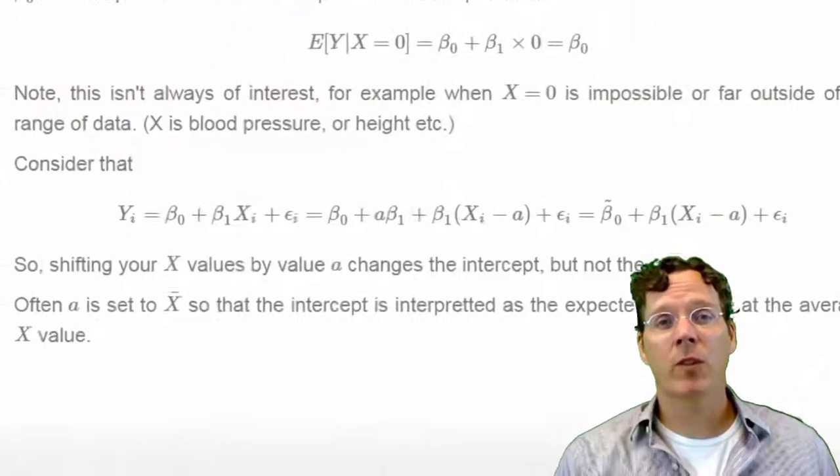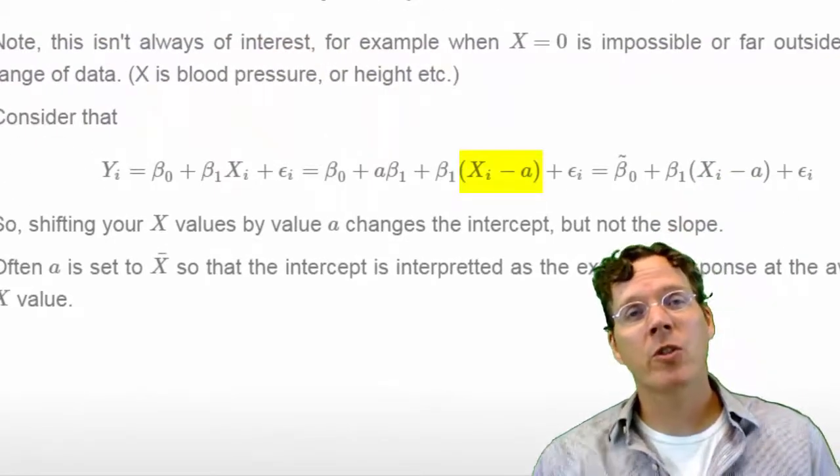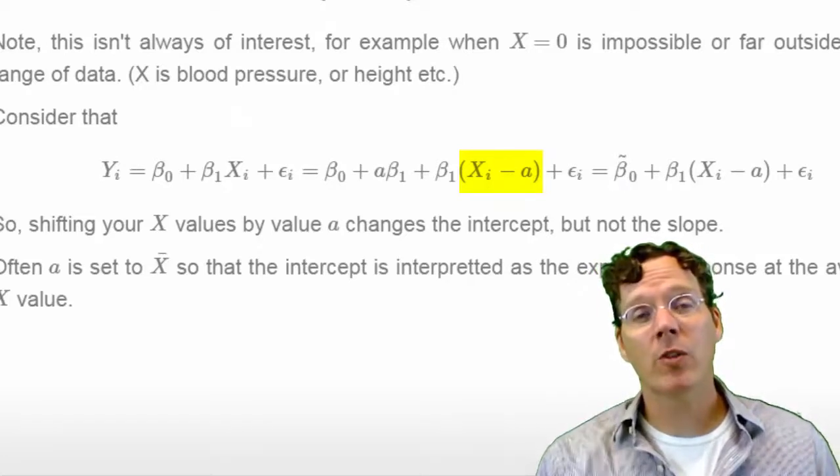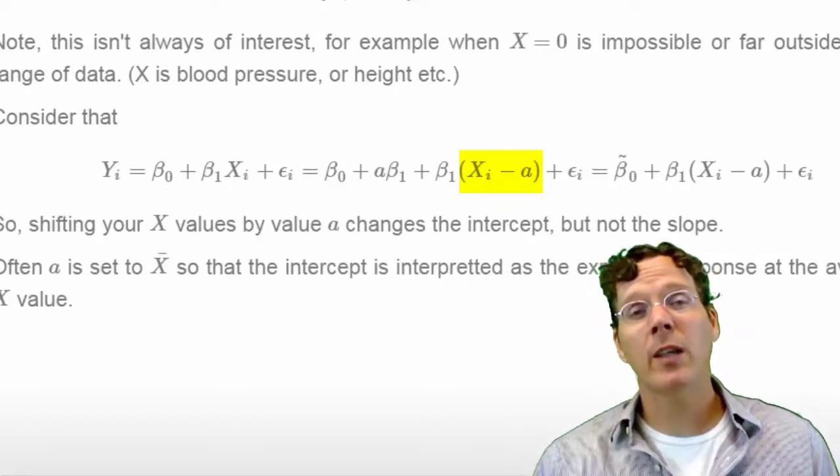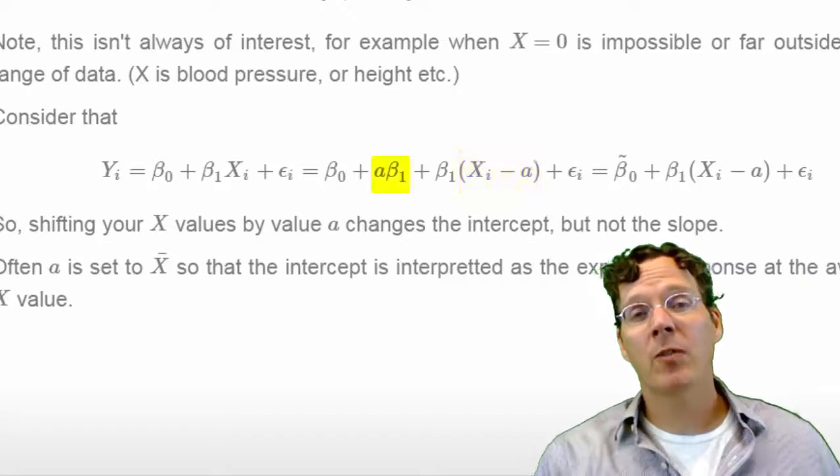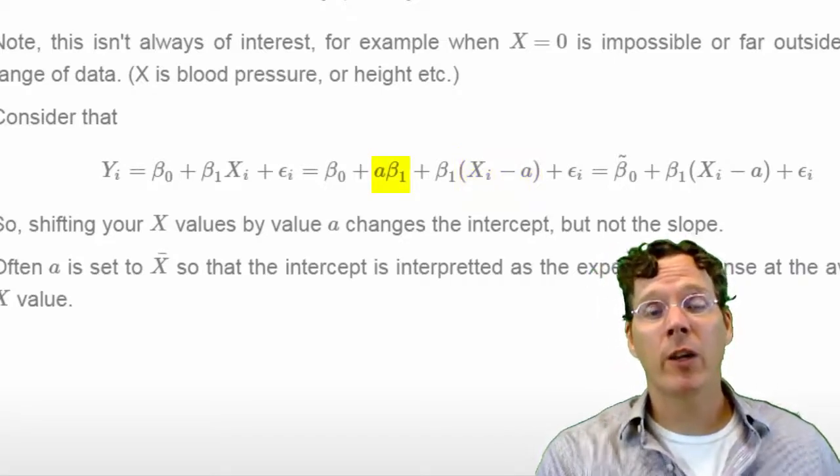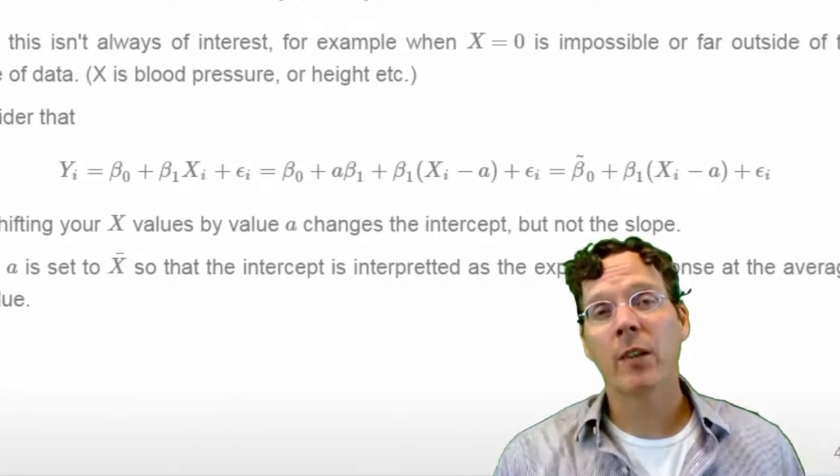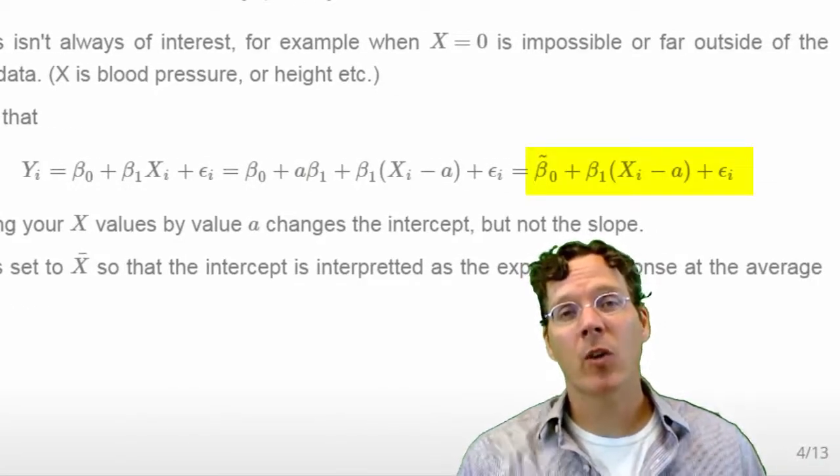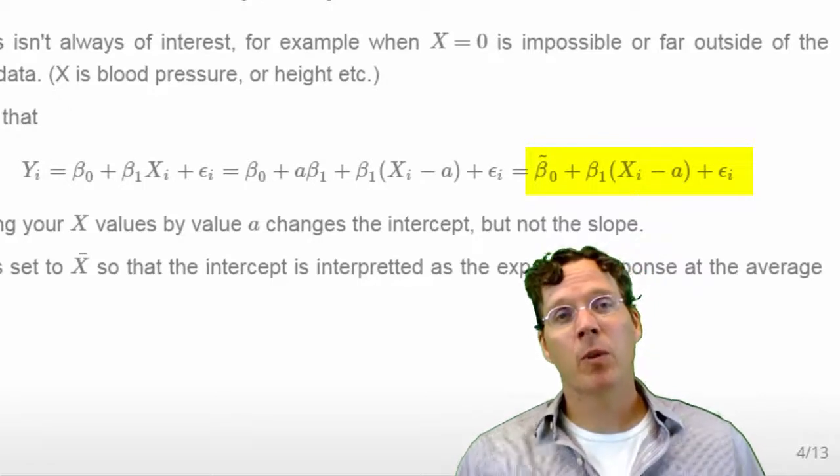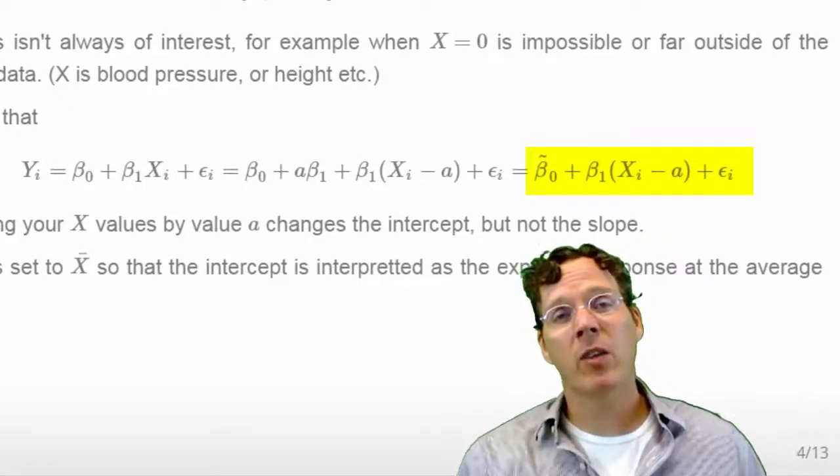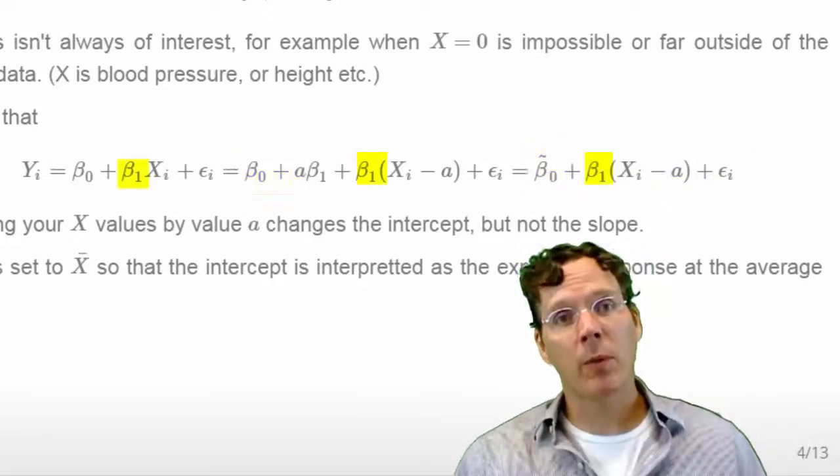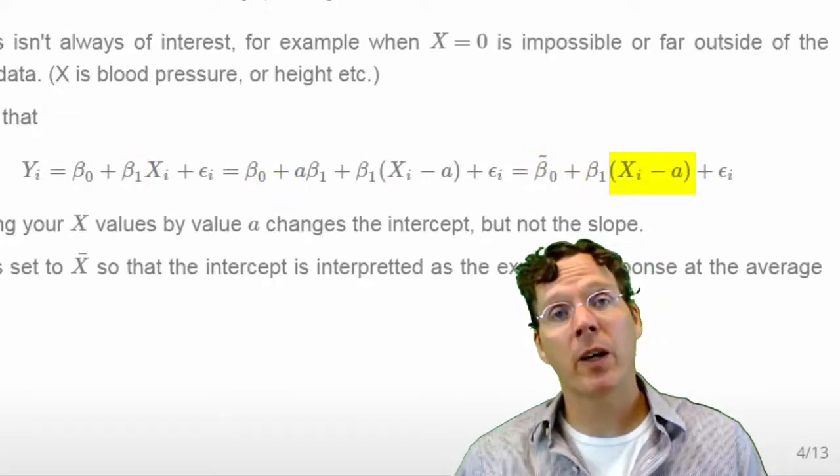However, there's an easy fix for this. Consider just shifting our regression variable by a constant a, and here in this equation I've just subtracted off an a here, which means I have to add an a times beta one over here to have done nothing, to have simply added zero. This is exactly rewriting the regression equation as beta naught tilde plus beta one times X minus a. A new regression line with a new intercept, the same slope, and my regressor now shifted by a constant a.